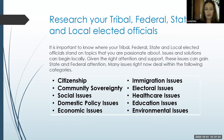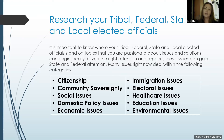You'll want to also research your tribal, federal, state, and local elected officials. It is important to know where they stand on topics that you are passionate about. Issues and solutions can begin locally, and given the right attention and support, these issues can gain state and federal attention. Many issues right now deal within the following categories: citizenship, community sovereignty, social issues, domestic policy issues, economic issues, immigration issues, electoral issues, healthcare issues, education issues, and environmental issues.